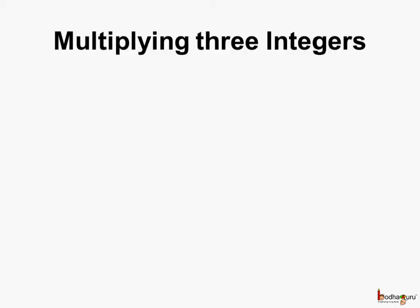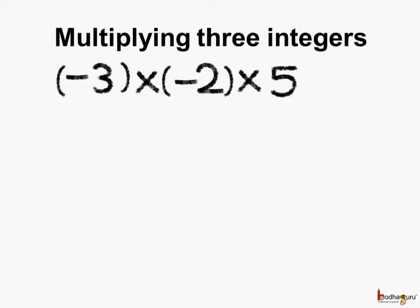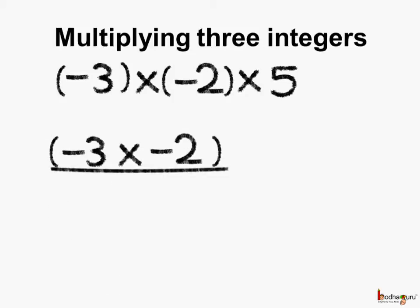Now let's try to multiply 3 integers. What is minus 3 multiplied by minus 2 multiplied by 5 equal to? Here we are multiplying 3 integers, so first let's multiply 2 integers first. In this case we will multiply minus 3 and minus 2 first — so minus 3 multiplied by minus 2, and then we multiply by 5.